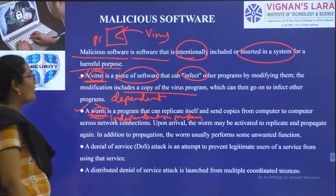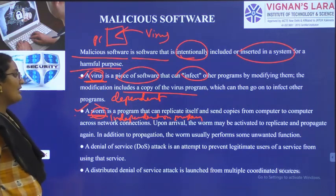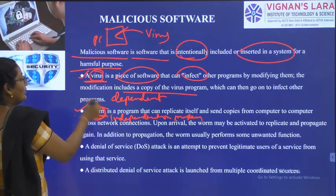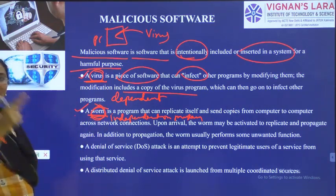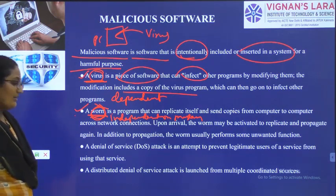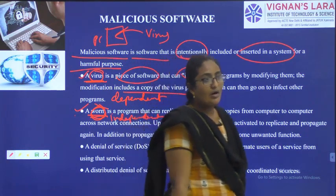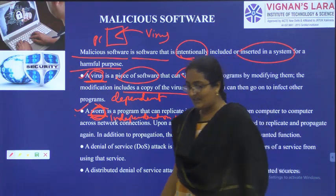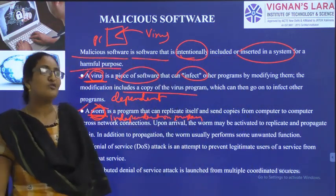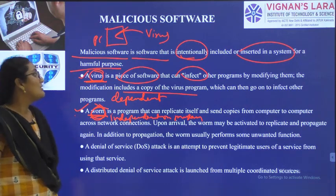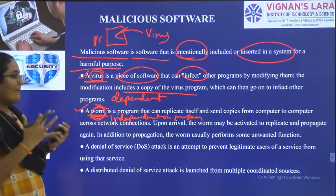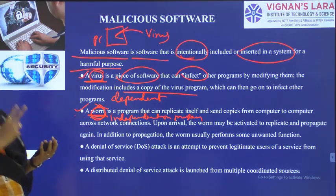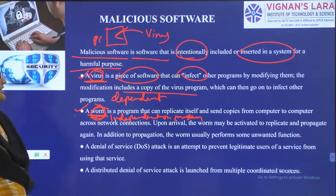A worm is a program that can replicate itself and send copies from one computer to another across network connections. Worm will replicate itself and transfer from one computer to another in a network. A malicious program is software intentionally injected into your PC to cause harm. Virus is dependent malicious software — it can copy, multiply, and propagate. Worm is independent but it will replicate and send copies of itself to other computers in a network.